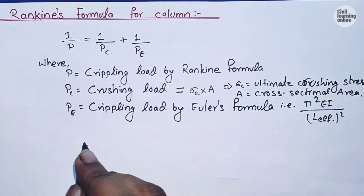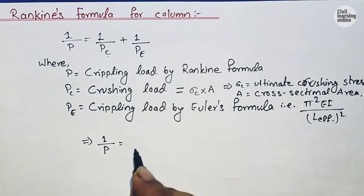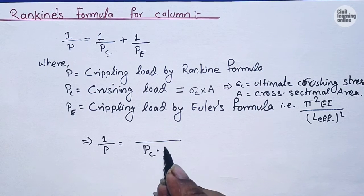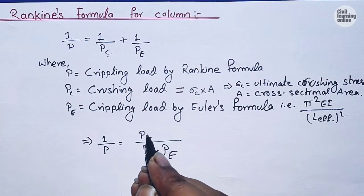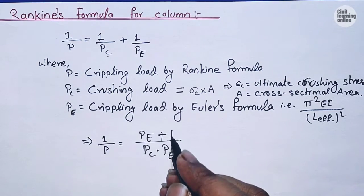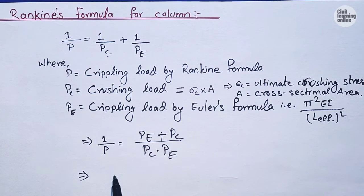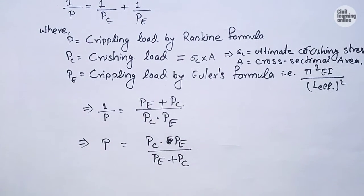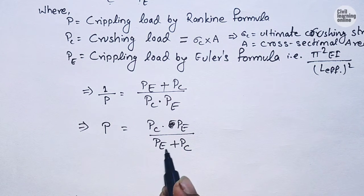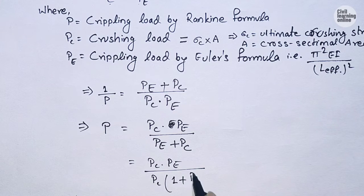We can rewrite the equation 1/P = 1/PC + 1/PE by taking the LCM of both terms. The LCM gives PC × PE in the denominator, and dividing by PC gives PE, while dividing by PE gives PC. Taking the reciprocal, we get P = PC × PE divided by (PE + PC). From the lower portion, taking PE as common gives P = PC × PE divided by PE times (1 + PC/PE).